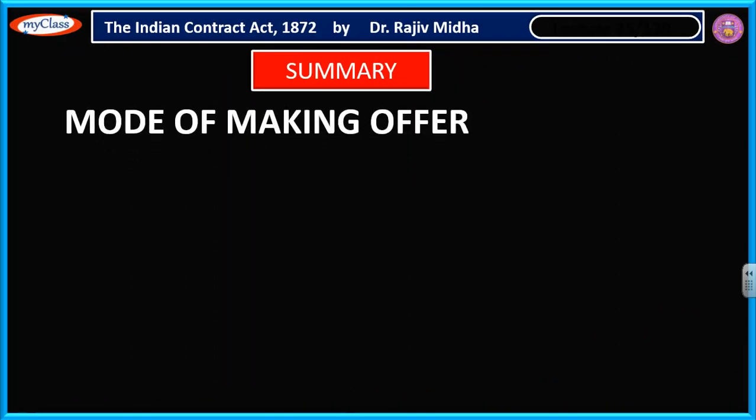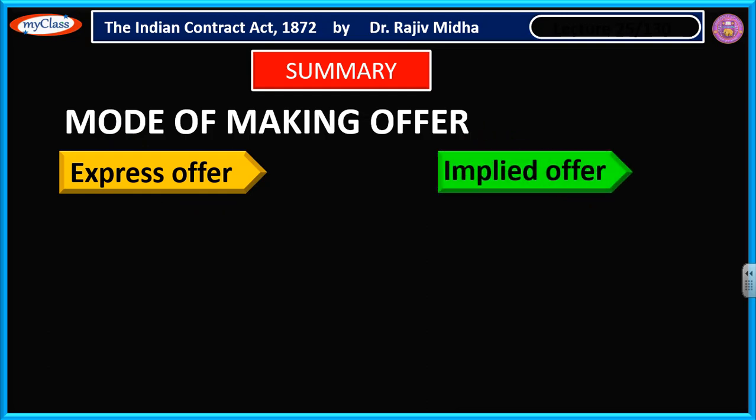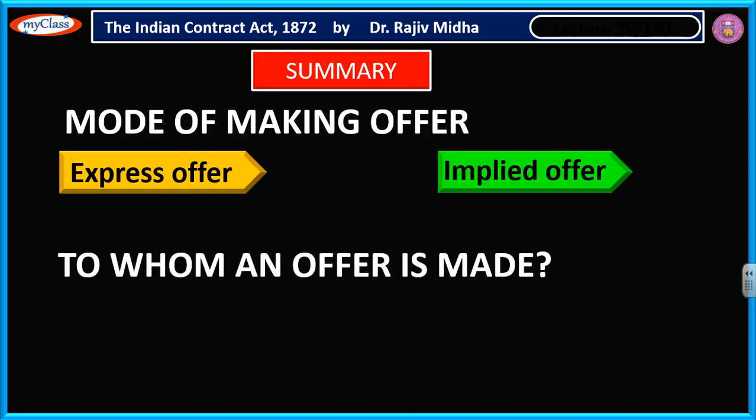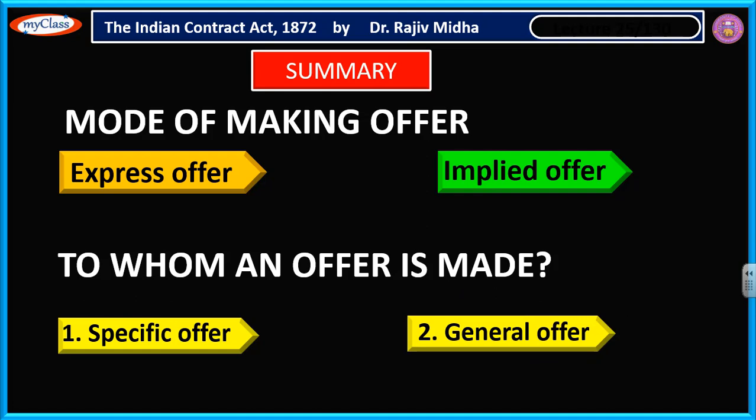Now let us summarize. We talked about the modes of making offer and said offer can be express offer or implied offer. The second point we discussed is to whom an offer is made — offer can be made to a specific person or a specific group of persons, making it a specific offer. When an offer is made to the public at large, this is a general offer, and this particular general offer case we have Carlyle vs. Carbolic Smokeball Company to understand.